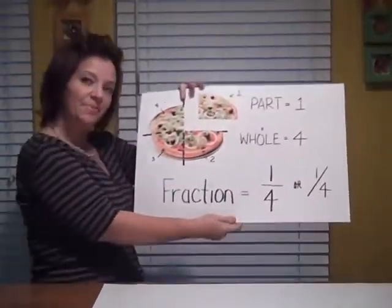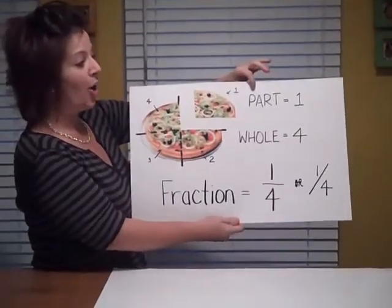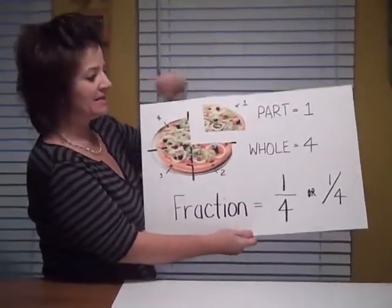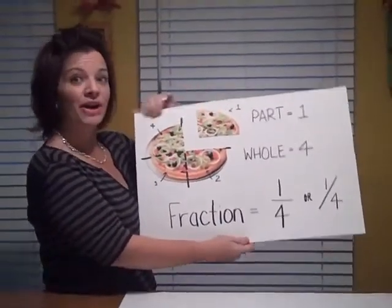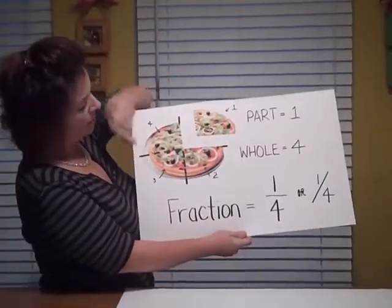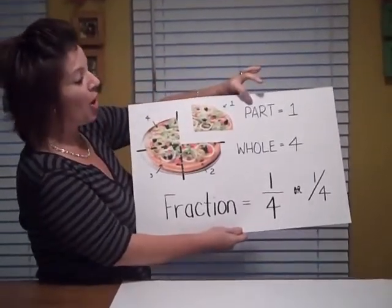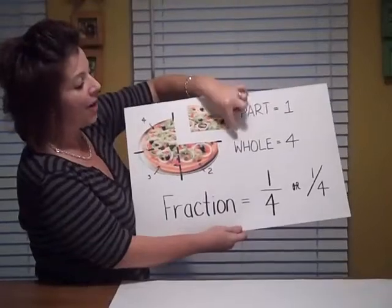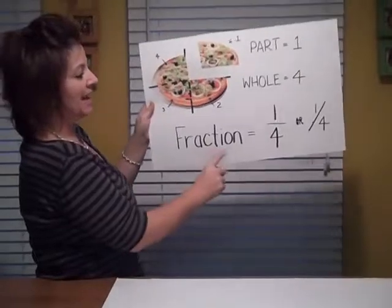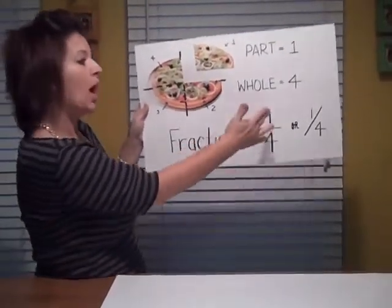Looking at this same pizza, you see that this piece of pizza, which is our part, represents number one — we have one piece. How many pieces are in our pizza? We have one, two, three, four. They're all equally the same size. So our part is one, our whole is four, and our fraction is one-fourth.